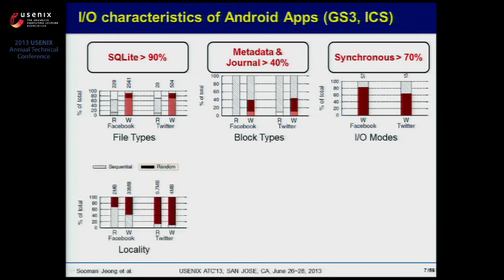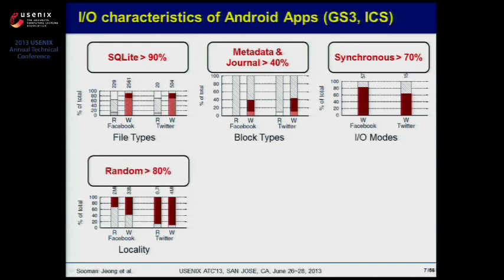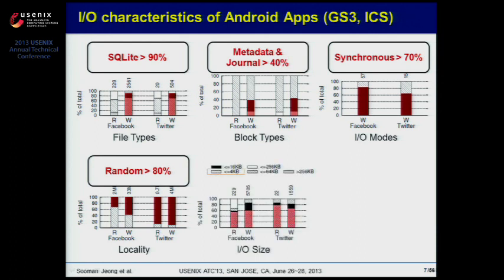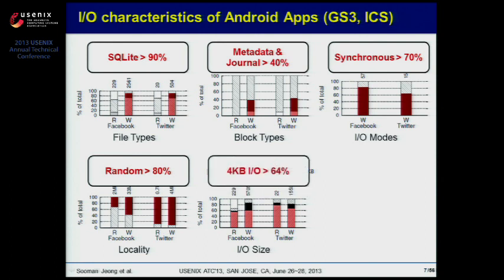Next, regarding locality of I/Os, 80% of total write requests is random write. Next, on the distribution of I/O size, I/O requests equal to or smaller than 4KB account for 64%.